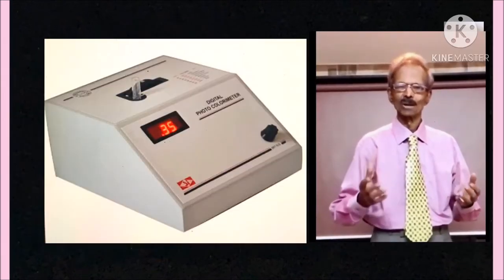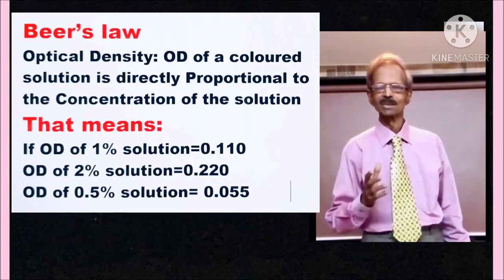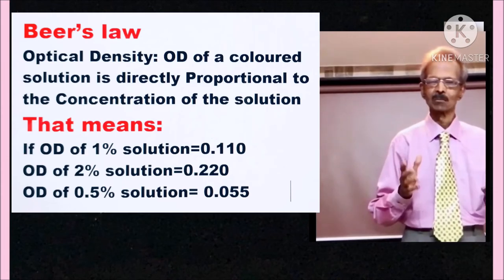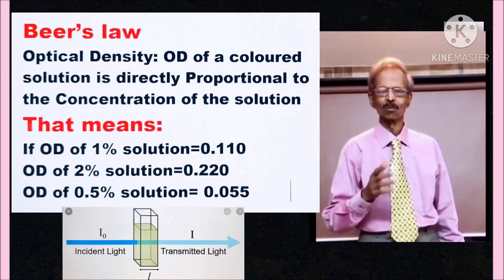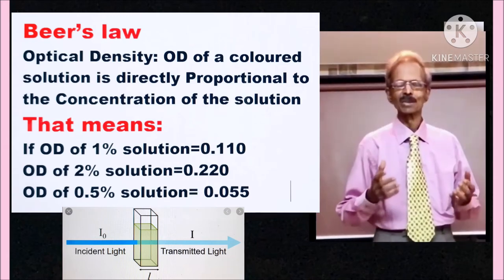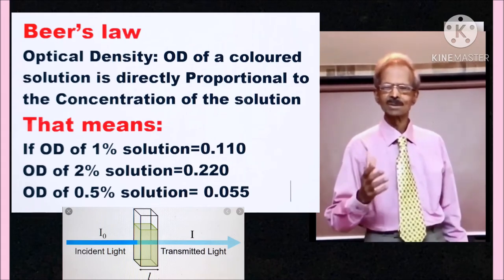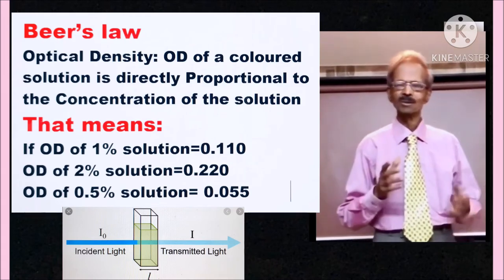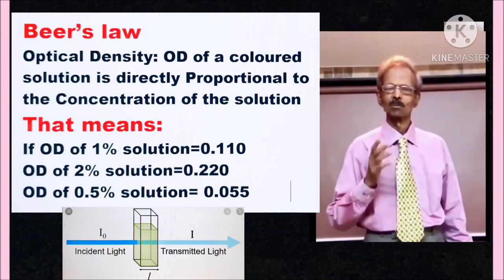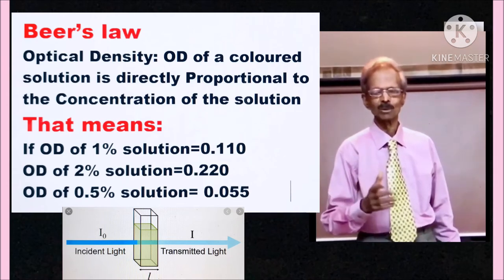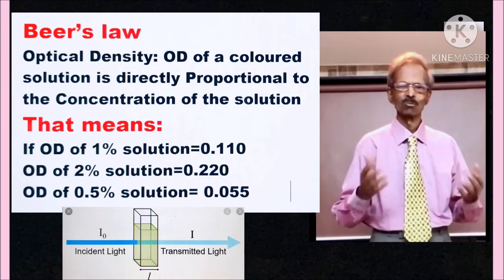Working of photometers and spectrophotometers is based on Beer and Lambert's law. According to Beer's law, optical density of color solution is directly proportional to concentration of the color solution. That means OD of 1% solution, if it is 0.110, then OD of 2% solution will be 0.220, and that of 0.5% solution will be 0.055.